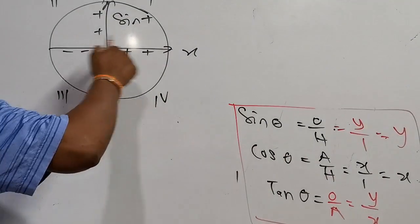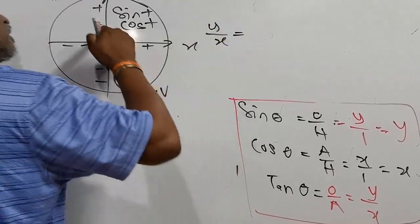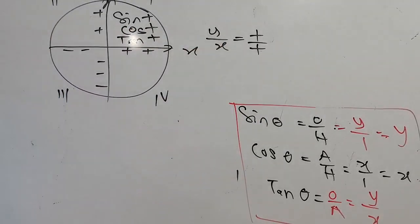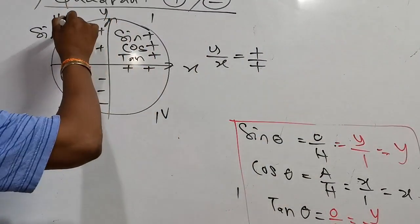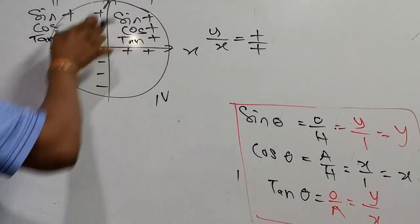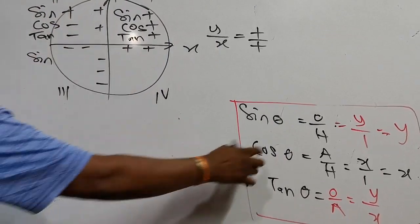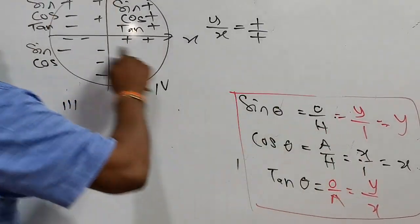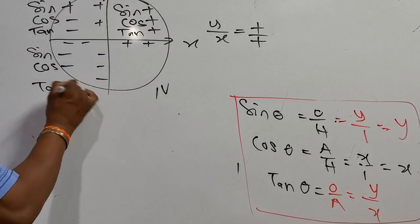In the first quadrant: cos refers to coordinate X which is positive, so cos is positive. Tangent is y over x — y is positive and x is positive, so positive divided by positive is positive. That's why everything in the first quadrant is positive. In the second quadrant: sin refers to coordinate Y which is positive, so sin is positive. But cos — coordinate X is negative.